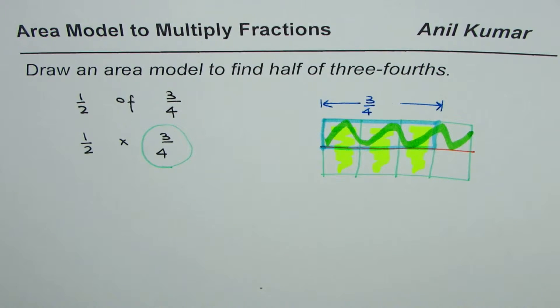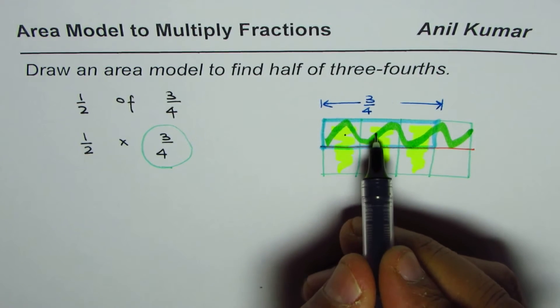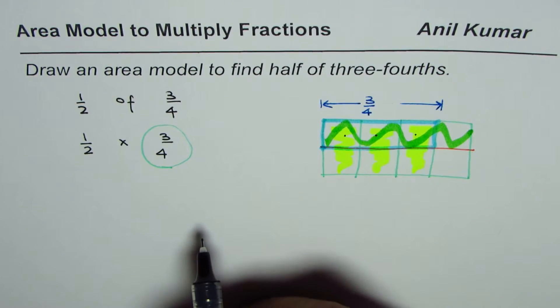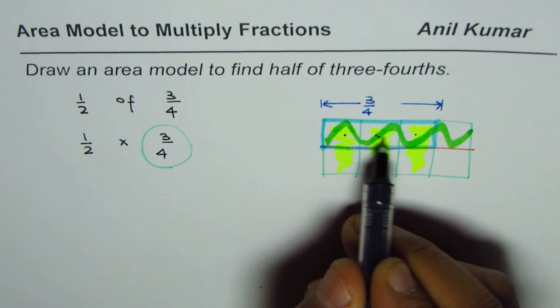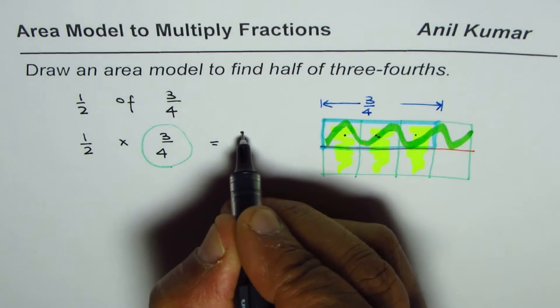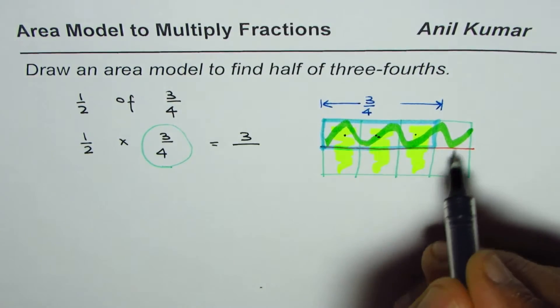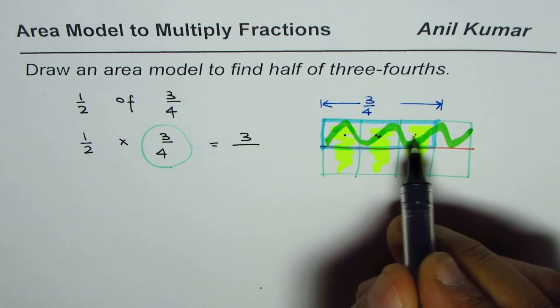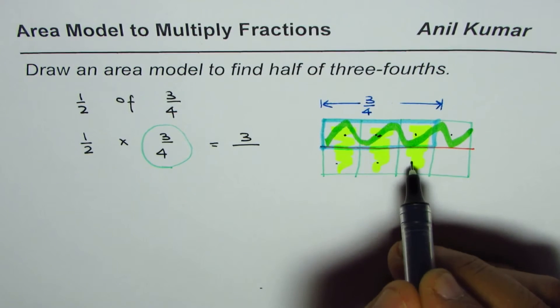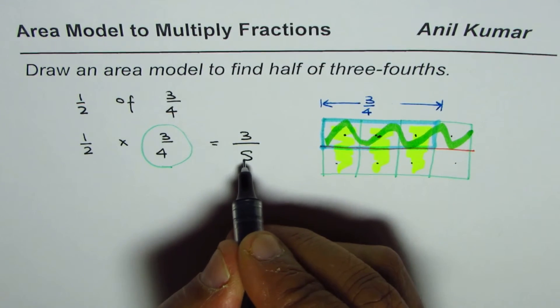The value of this is how many blocks are there? One, two, three. Let's write it down. So three out of in all how many? We have one, two, three, four, five, six, seven, eight. Three out of eight.